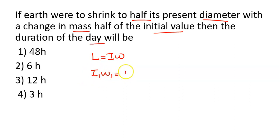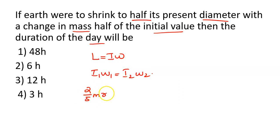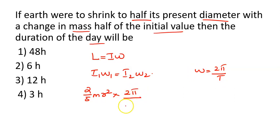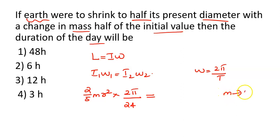We apply conservation of angular momentum: I₁ω₁ = I₂ω₂. The moment of inertia of a solid sphere is (2/5)mr². We substitute the initial and final values — the initial moment of inertia uses the original mass M and radius R, and the final uses half the mass (M/2) and half the radius (R/2). The initial period T₁ is 24 hours.